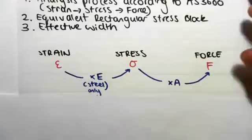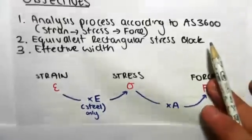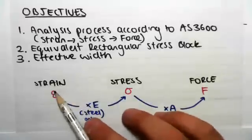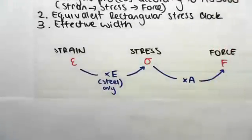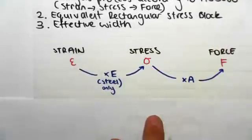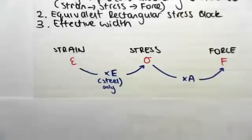What the code is going to be giving us in AS 3600 is going to be maximum values of strain. Now, the reason they do that is twofold. The first is they can't give us values of stress because our stress is going to vary depending on the material.